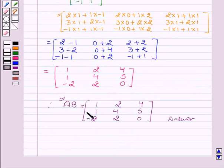Therefore, AB equals matrix 1, 2, 4, 1, 4, 5, minus 2, 2, 0, which is the required answer.